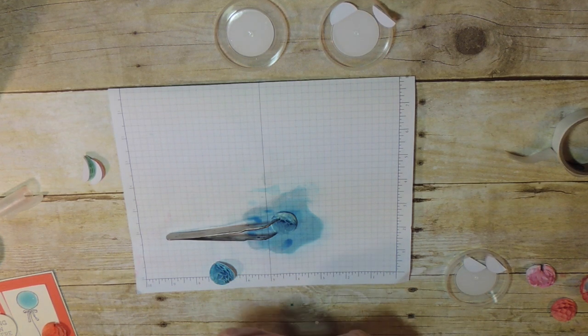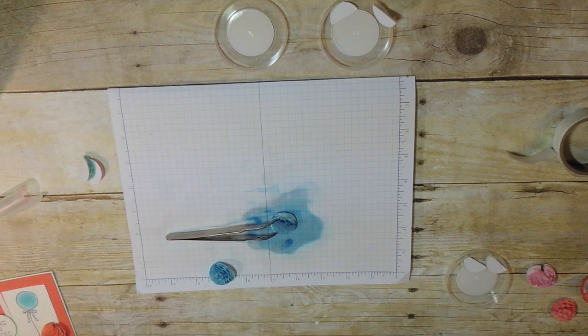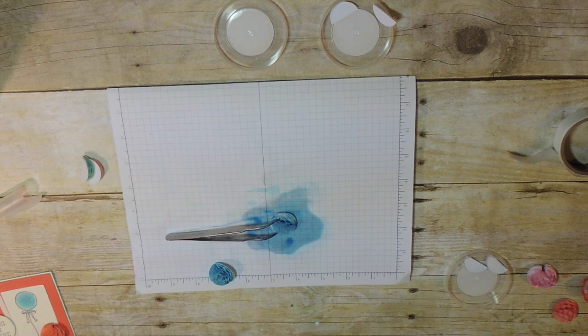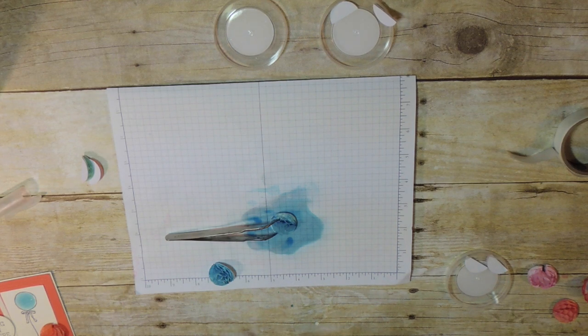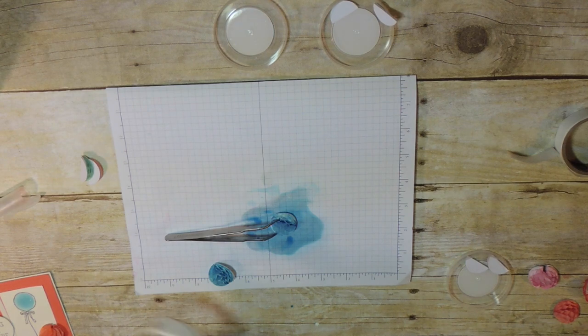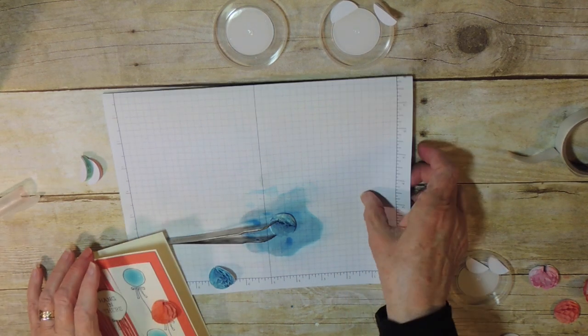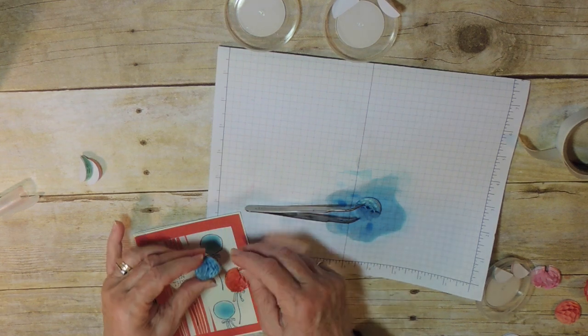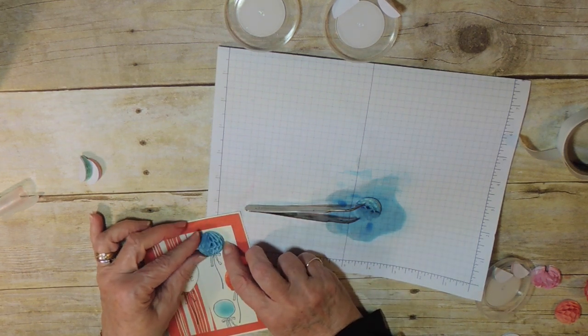And then what you're going to do is just take the other side and get your glue dots, take it to the glue dot, and then take another one at the other end. And you'll be all set. I already have this set up with some glue dots on it. So we're all set to go here.